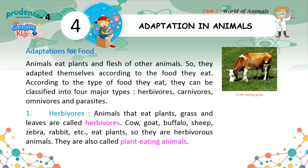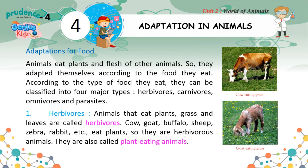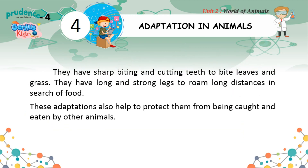Adaptations for Food. Animals eat plants and the flesh of other animals, so they adapt themselves according to the food they eat. They can be classified into four major types: herbivores, carnivores, omnivores, and parasites. Herbivores are animals that eat plants, grass and leaves — cow, goat, buffalo, sheep, zebra, rabbit, etc. are herbivorous animals, also called plant-eating animals. They have sharp biting and cutting teeth to bite leaves and grass, and long strong legs to roam long distances in search of food. These adaptations also help to protect them from being caught and eaten by other animals.